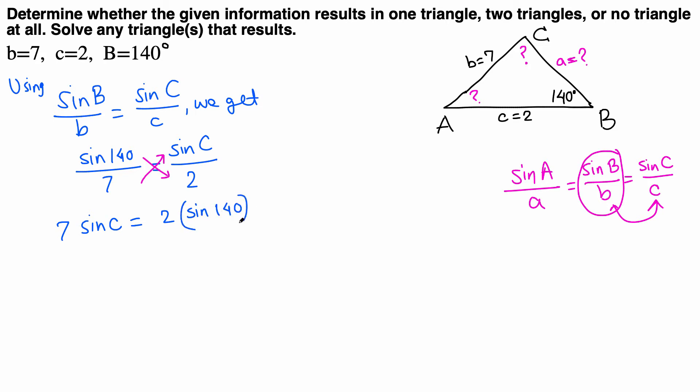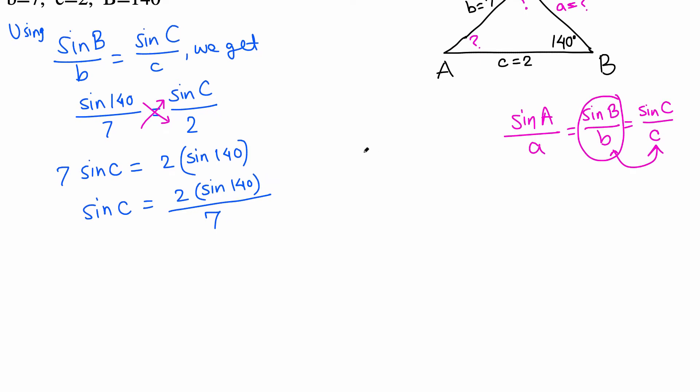Cross multiplying: 7 sine C equals 2 times sine 140. So sine C equals, divide both sides by 7, 2 sine 140 all over 7. Then C is sine inverse of this whole thing: 2 sine 140 all over 7.